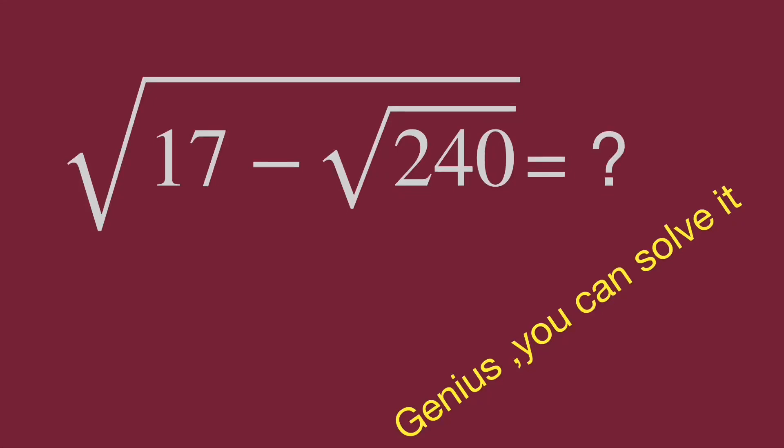Hello, here's a simplification question. Square root of 17 minus square root of 240. What is the simplified result?